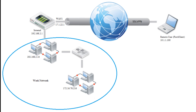Let's start by reviewing a topology of a typical FortiGate-protected network. The internal port of the FortiGate is connected to the internal work network, which in this example consists of two subnets. The WAN port of the FortiGate is connected to the internet. Remote users wishing to connect to the work network from the internet can do so by connecting to the FortiGate securely over SSL VPN.